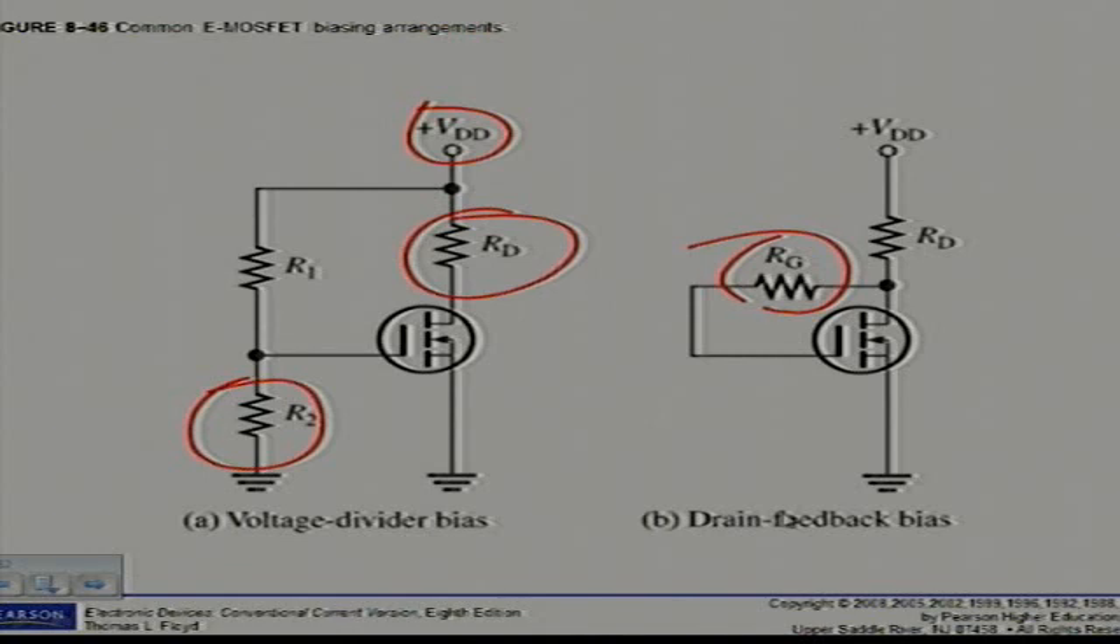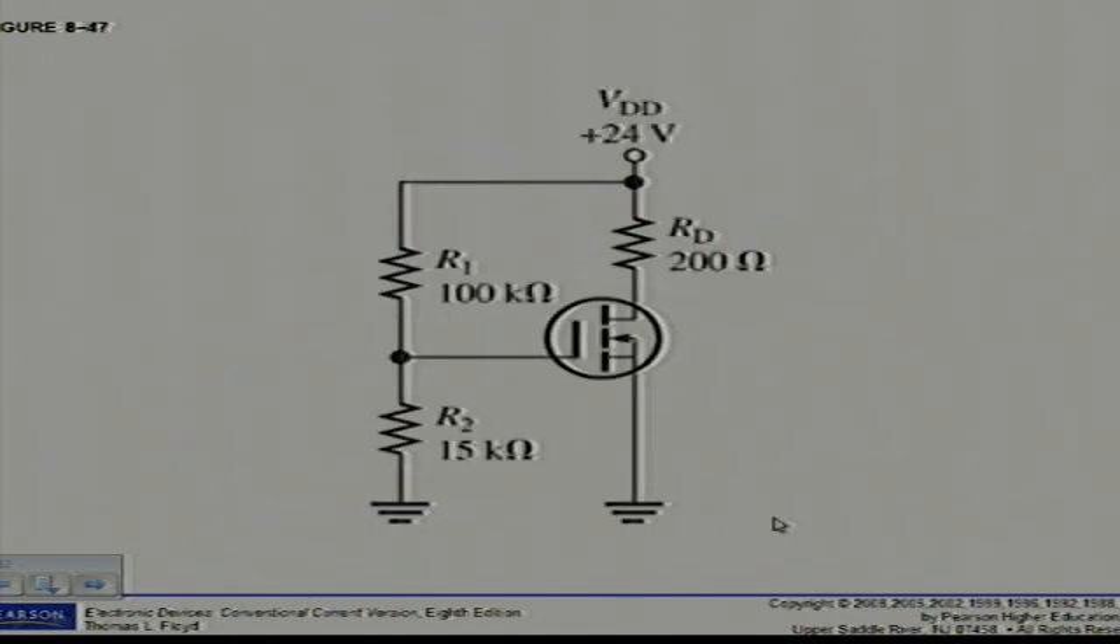Let's have a look at the examples here at the bottom of the page. On page 405, example 8.18. Determine VGS and VDS for the E MOSFET circuit in figure 8.47. Assume this particular MOSFET has minimum values of ID on is 200 milliamps at VGS of 4 volts, and VGS threshold is equal to 2 volts.